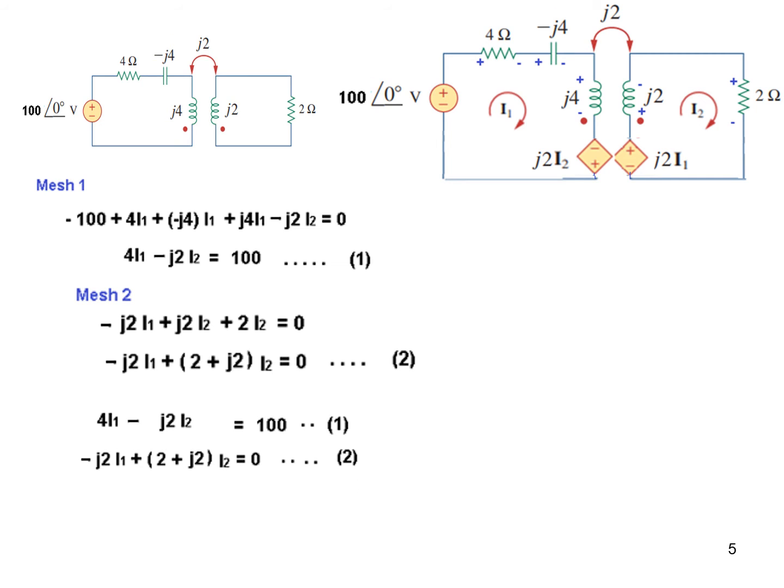And now in this case, it is easier to write these in matrix form and solve it. So equation number 1 and equation number 2, we can write it in matrix form. So this is the magnitude, and these are the two unknown currents, and this is the voltage. So let's move to the next slide.